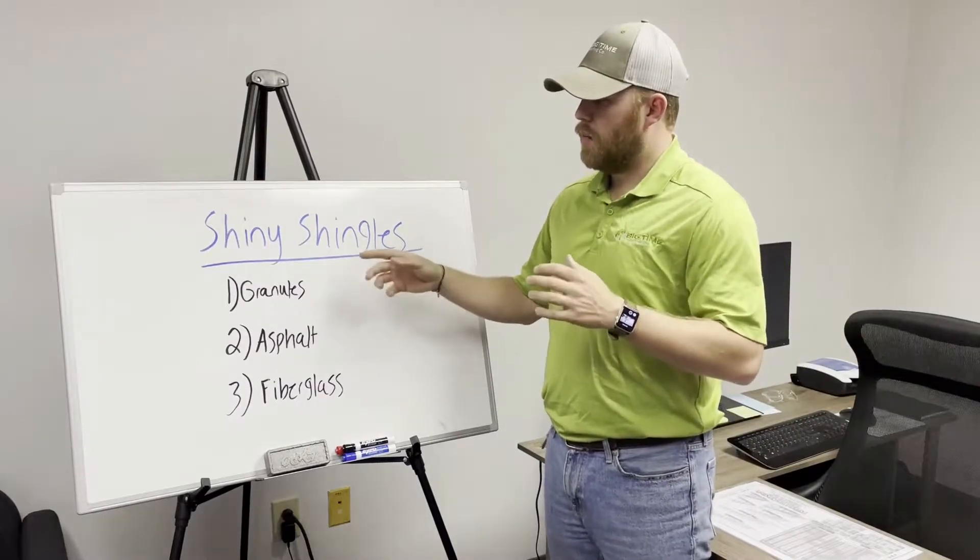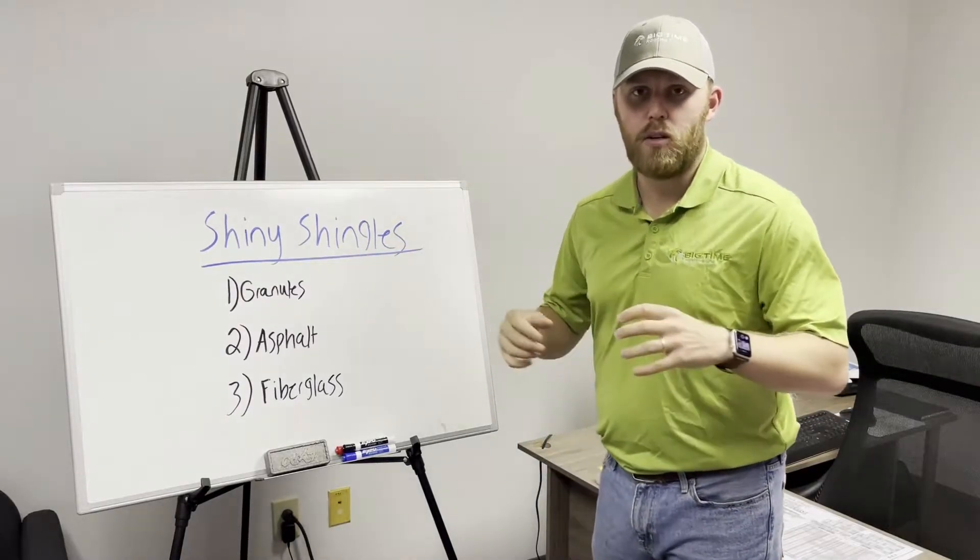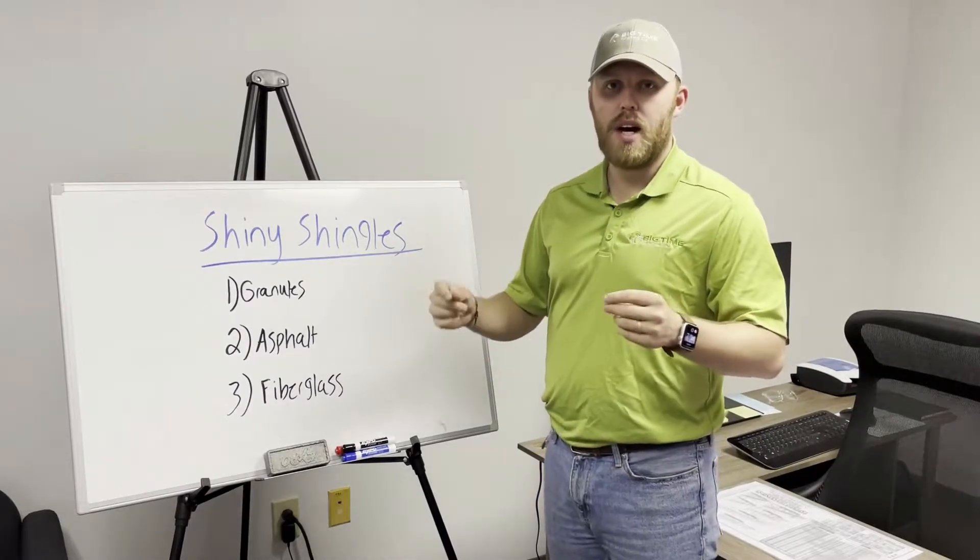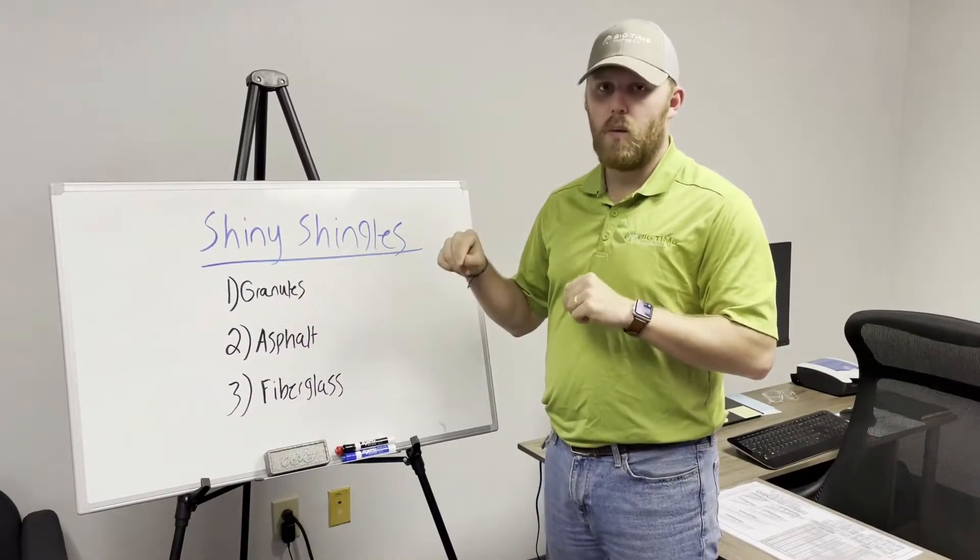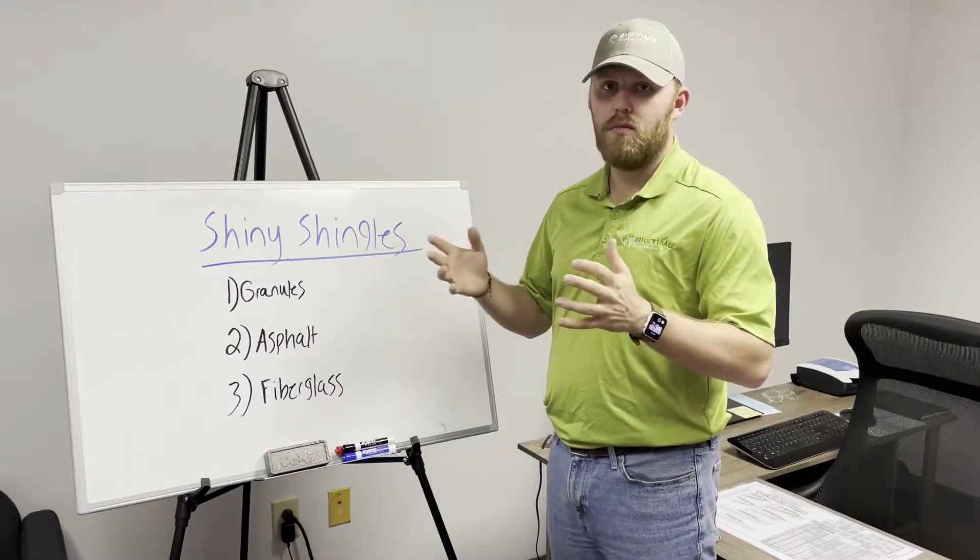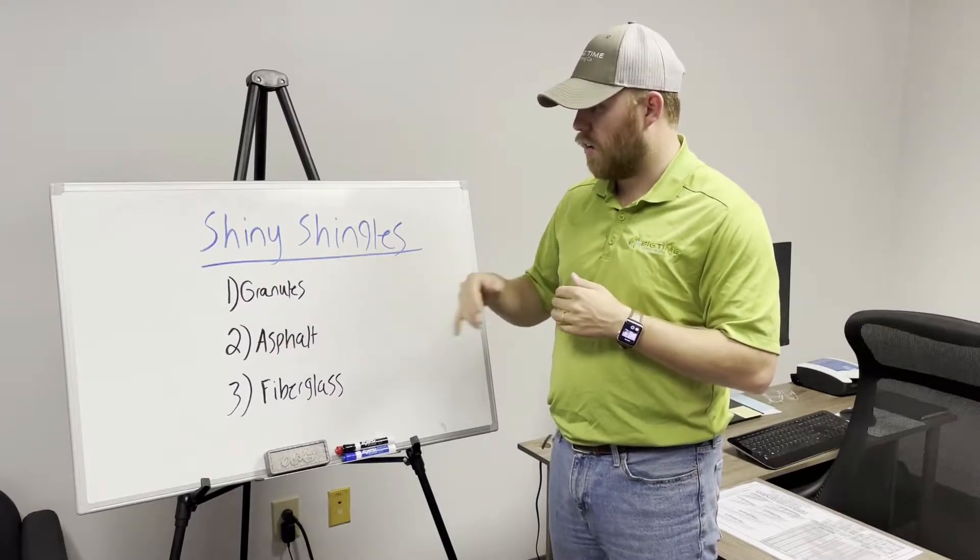So over time, shingles are protected by granulates. They have little tiny rocks that are embedded in the asphalt. Over time, those granulates work their way out, they fall down, or they get wind damage, or they get hit by hail. There's a large amount of things that make these granulates fall out.